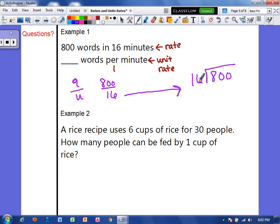Alright, 16 would go into 8 zero times, but 16 could go into 80 five times. That equals 80. And 16 goes into 0 zero times. So our unit rate here would be 50 words per minute.